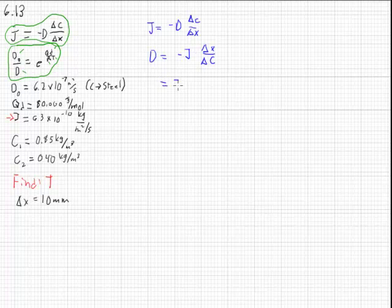So d equals negative j times delta x over delta c. This equals negative j, which is our 6.3 times 10 to the negative tenth kilograms per meter squared second, times delta x. We'll assume that x2 is at 10 millimeters and x1 is at 0, so delta x is 10 millimeters. And c2 is 0.4 minus 0.85.